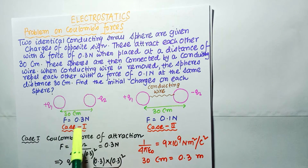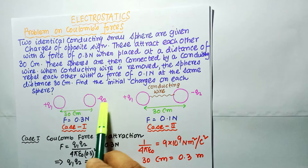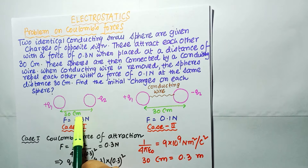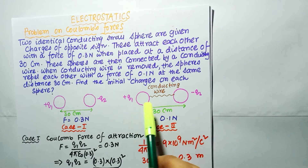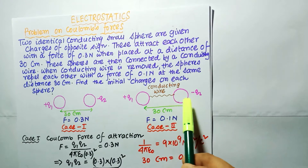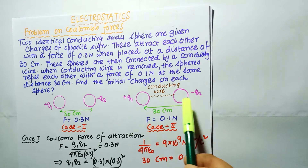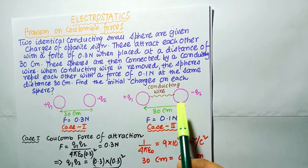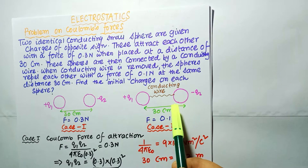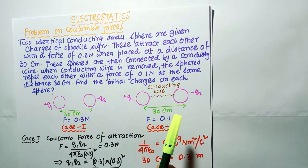In Case 1, q1 and minus q2 are separated by a distance of 30 cm, and the force acting between them is 0.3 Newton. In Case 2, the two spheres are connected by a conducting wire and the charges are distributed among them. The distance is again 30 cm, but the force acting between them is 0.1 Newton.